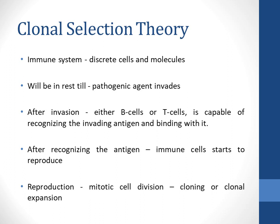This clonal selection theory describes that the immune cells are scattered in our body and will remain in the rest state until a pathogenic attack occurs. A pathogen means the virus, bacteria, or fungal attack that occurs to our body. Whenever this attack occurs, our immune cells tend to destroy those attacks. These are all discrete cells or molecules that will be at rest until a pathogenic attack occurs.